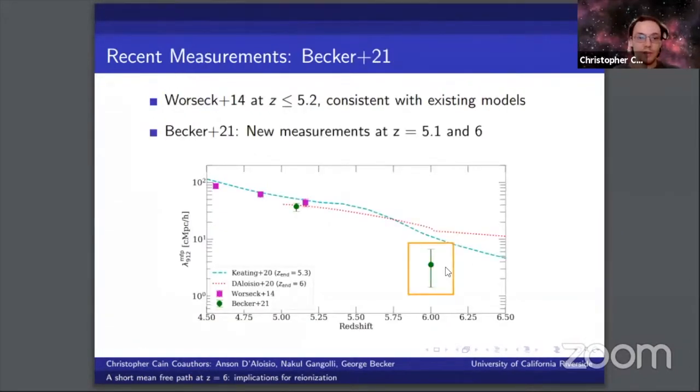Until recently, measurements of the mean free path at redshifts less than 5.2, which I've shown here from Worseck et al. 2014, have been consistent with existing reionization models. On this plot, I've shown two models of the mean free path predicted by two theoretical models of reionization, one from Keating et al. 2020,